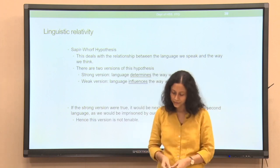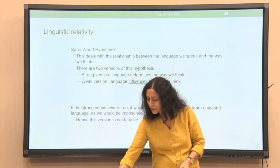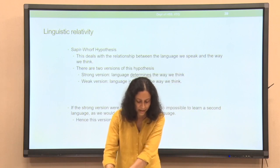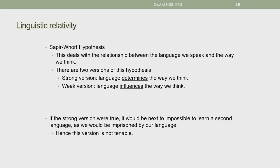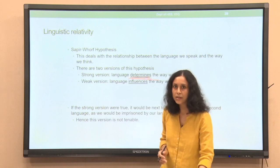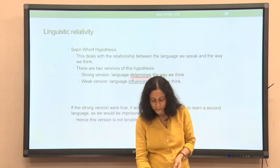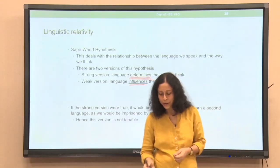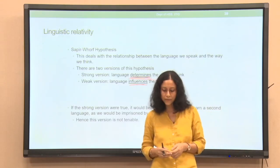The Sapir-Whorf hypothesis has two versions. The strong version says that language determines the way we think — it has a deterministic role. This is a very strong claim: language is the only glass through which we look at the world. However, there is also a weaker version, which says that language may not decide the way we look at the world, but it certainly has an influence on the way we think. These are the two versions of the Sapir-Whorf hypothesis.